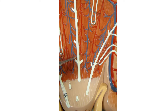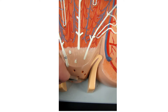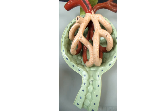Then we attach to a collecting duct, and all these little collecting ducts run all the way down into the renal papilla. The renal papilla allows urine to collect here in the minor calyx.